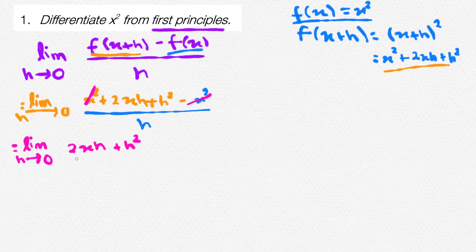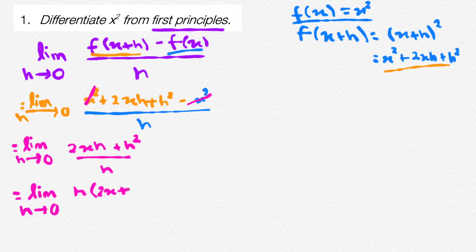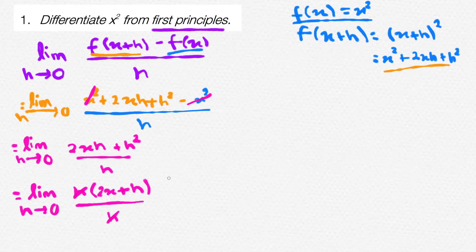Now, see if we can solve this and get rid of the h in the denominator. Looking at the numerator, we can factorize this — let's take out the h. So, the limit as h approaches 0 of h times 2x plus h, divided by h. By factoring out the h, we can cancel out the h in the numerator and denominator. This will leave you with the limit as h approaches 0 of 2x plus h.